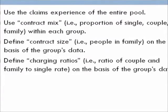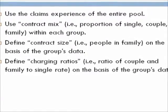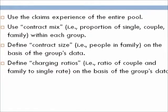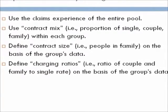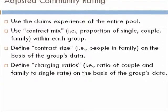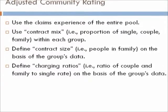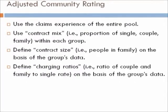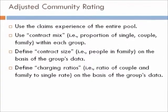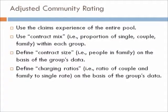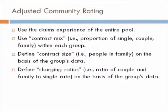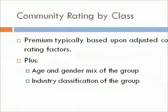Adjusted community rating is a type of community rating that uses techniques to calculate premiums for different proportions of single, couple, or family within each group — referred to as contract mix. Another concept is contract size, which is the number of people covered within each family. Charging ratio is the ratio of couple and family rates to the single rate.